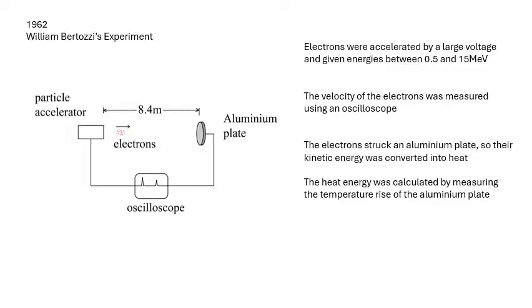He measured their velocity using an oscilloscope. Then the electrons hit an aluminum plate and their kinetic energy changed into heat energy. He measured the temperature rise of the aluminum plate, which told him how much heat energy it gained and the kinetic energy of the electrons.